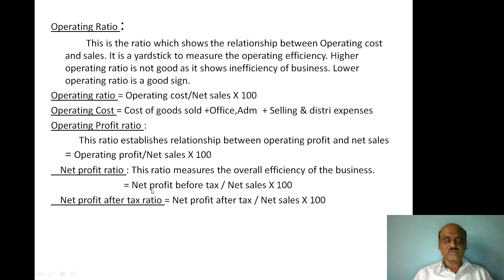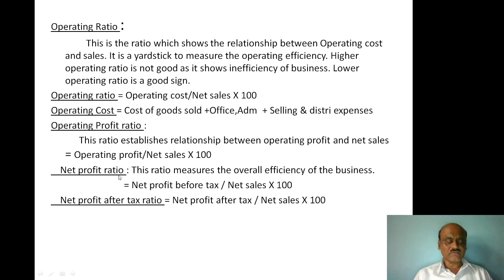The Net Profit Ratio formula uses net profit before tax and after interest. The formula is: Net Profit Before Tax divided by Net Sales, multiplied by 100. This gives the net profit ratio.